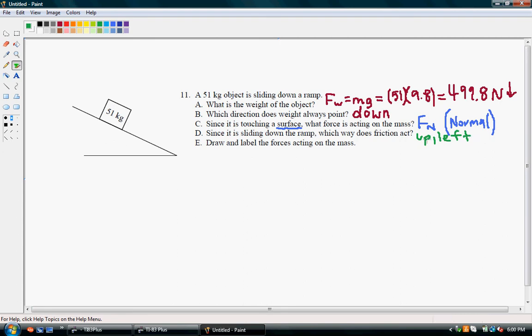Because friction directly opposes where the object wants to go. And now we need to draw and label the forces acting on the mass. So we have the force of weight. Let me try that again. It should be directly down.